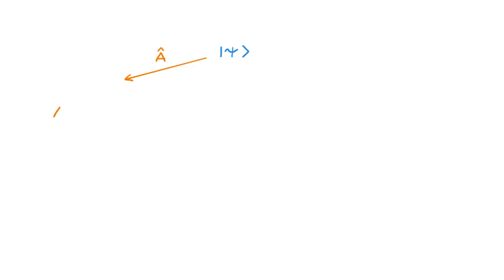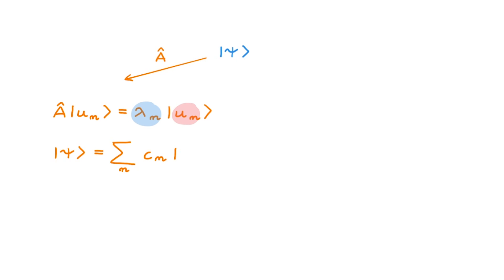The key equation to consider is the eigenvalue equation of A, where, as usual, lambda_n are the eigenvalues and u_n the eigenstates. These eigenstates form a basis of state space, so we can expand the state psi in this basis. The expansion coefficients C are the bracket between u_n and psi, and they provide the representation of the state psi in the u basis of eigenstates of A.